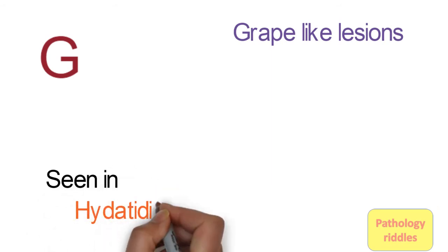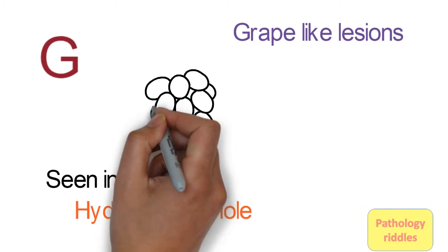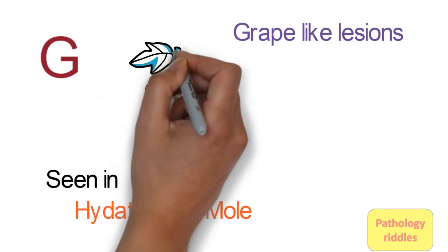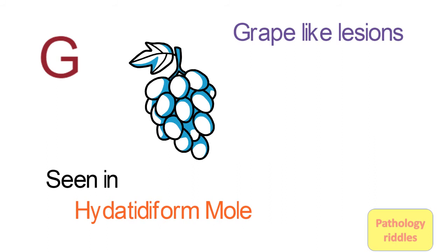Next we go to G. G is grape-like lesions, seen in hydatidiform mole. In gross appearance, they appear like grapes—thin, translucent structures.